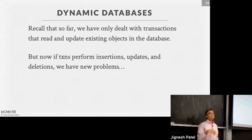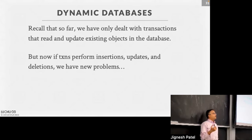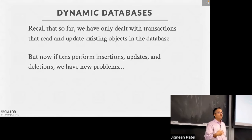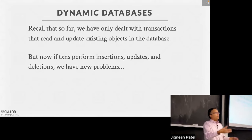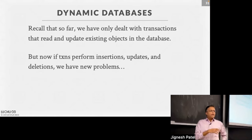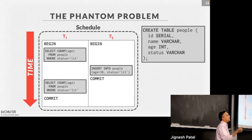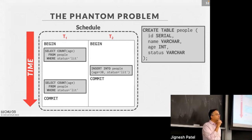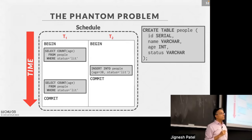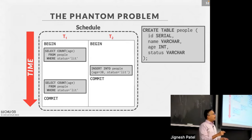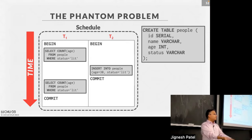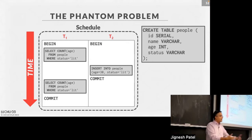So far we've assumed database objects are real — physical things like pages and records — that we're doing something with, making copies of, or acquiring locks on. But in real life, you can also have transactions that are creating new things. We've completely skirted the issue of what happens when something is getting created. By and large everything we've talked about with locking will work. But there's an interesting problem: when you are creating, you have to worry about one more thing. We've talked about unrepeatable reads, dirty reads, and all that — there's one more anomaly to worry about, and it has to do with the fact that all these protocols operate on physical objects that are present in the database.